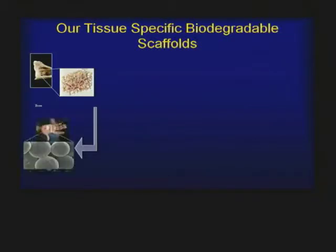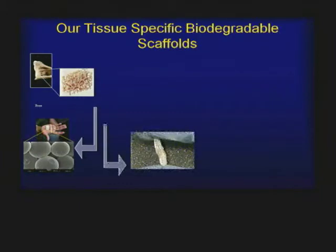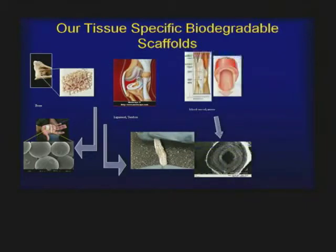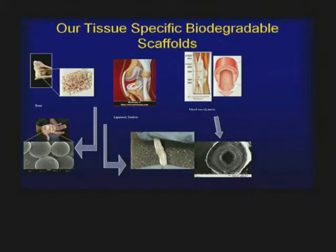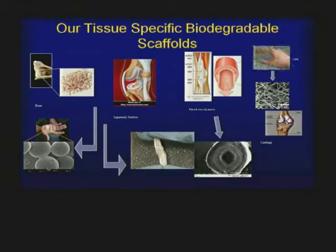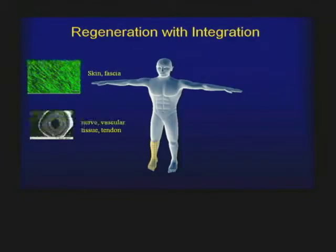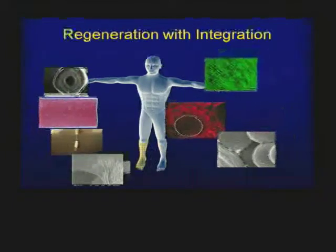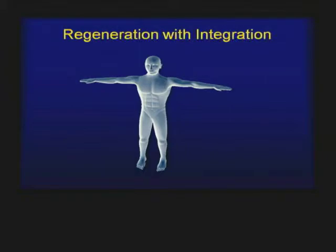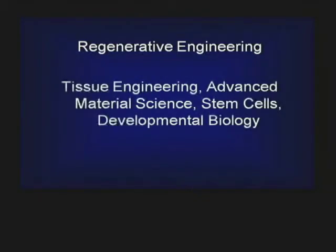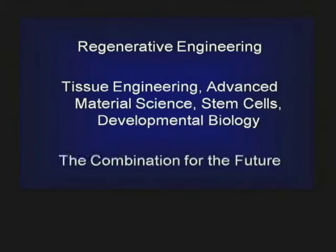We've now created different tissue engineered scaffolds: a sintered matrix for bone, an LC ligament scaffold, nanofiber matrices for nerve and blood vessel, and a nanofiber cartilage matrix, as well as scaffolds for skin. Our approach is to combine these components and integrate them to regenerate larger areas of tissue, with the goal of eventually regenerating whole limbs. These have been a series of bold ideas funded by NIAMS over the last 20 years. Our new area — regenerative engineering — combines tissue engineering with advances in material science, stem cells, biology, and developmental biology.